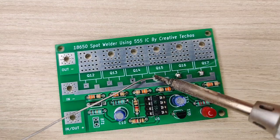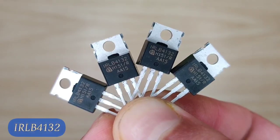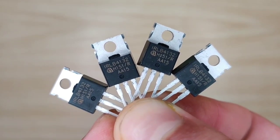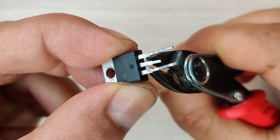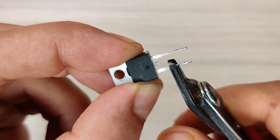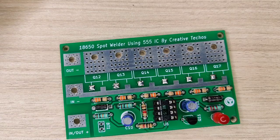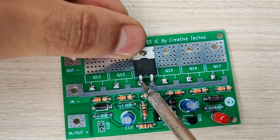Now pre-solder all the MOSFET pads. I used IRLB4132 high current MOSFETs. Trim the middle pin of MOSFET since it is internally connected with MOSFET body. Now solder all the MOSFETs at its places.